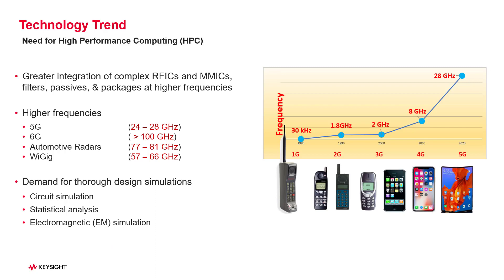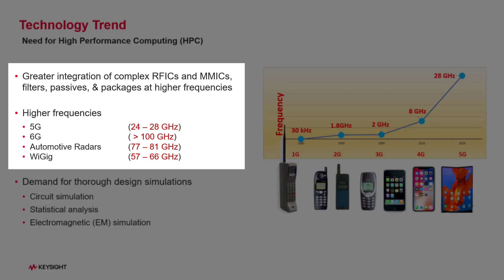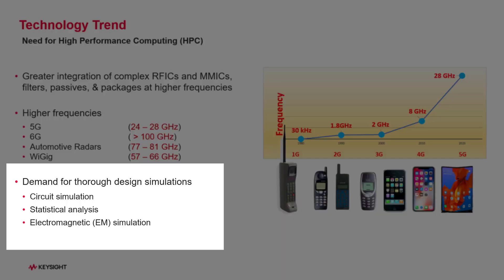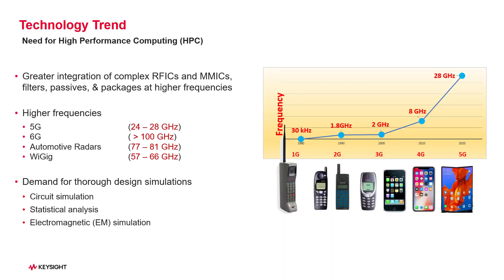MIMIC and module designs have been increasingly becoming more and more complex. They have higher frequencies, higher clock speeds, along with highly dense multi-technology integration, all the way down to the wafer level. All this demands a vast amount of thorough design simulations, from circuit simulation to statistical analysis to EM electromagnetic simulation with process variation — all to ensure the final design meets all specifications before building hardware, to avoid costly mistakes.